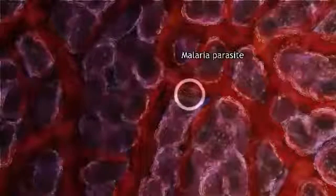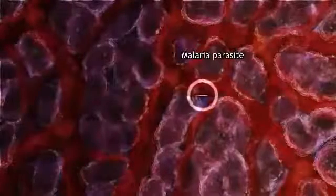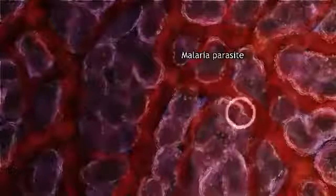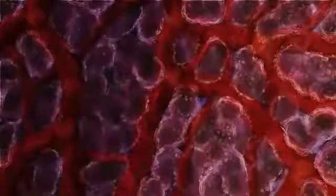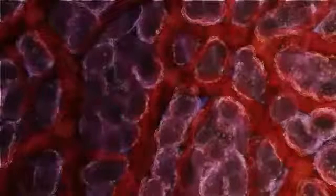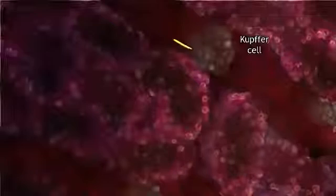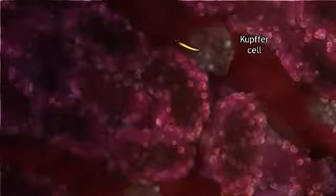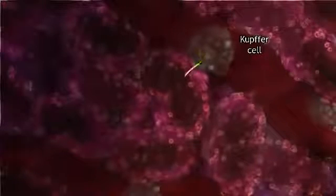Sensing its arrival at the liver, the parasite searches for an exit. A sentinel kupffer cell is the entry point to liver tissue.